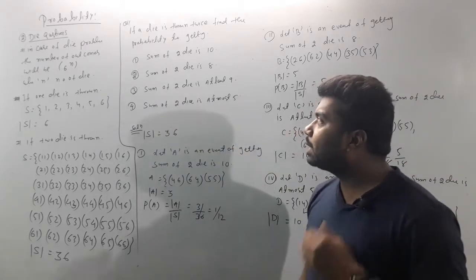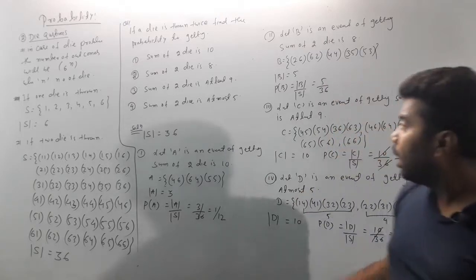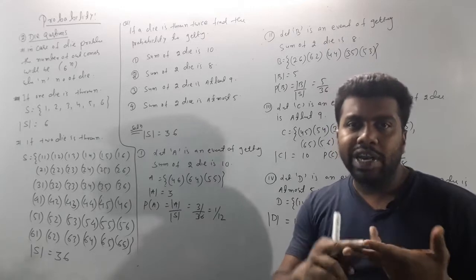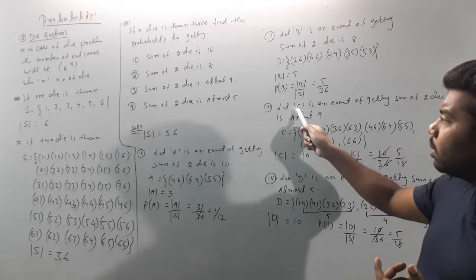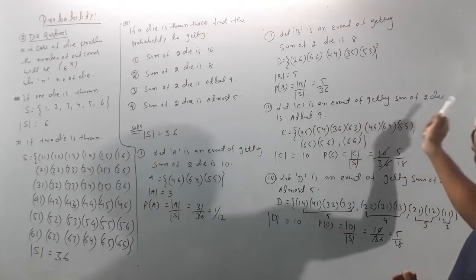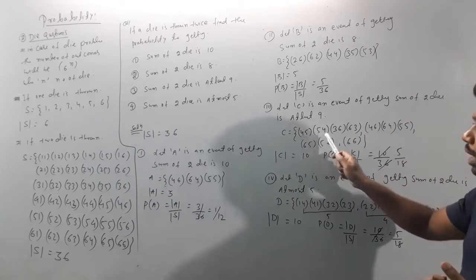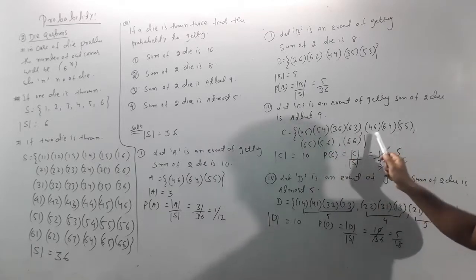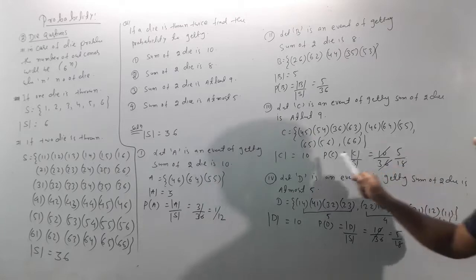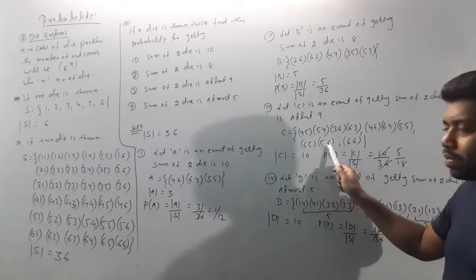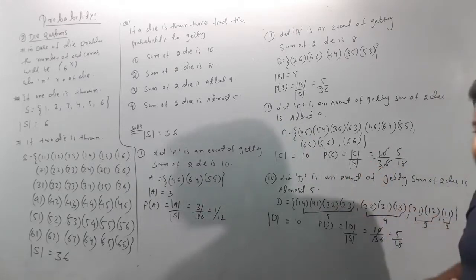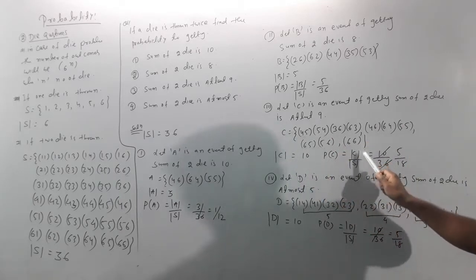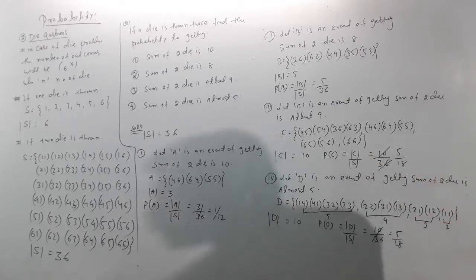Third: Let C be the event of getting a sum of at least 9. At least 9 means sums of 9, 10, 11, or 12. Sum 9: (3,6),(4,5),(5,4),(6,3) — 4 outcomes. Sum 10: (4,6),(5,5),(6,4) — 3 outcomes. Sum 11: (5,6),(6,5) — 2 outcomes. Sum 12: (6,6) — 1 outcome. Total |C| = 10. P(C) = 10/36 = 5/18.